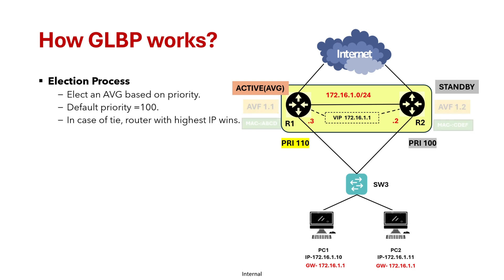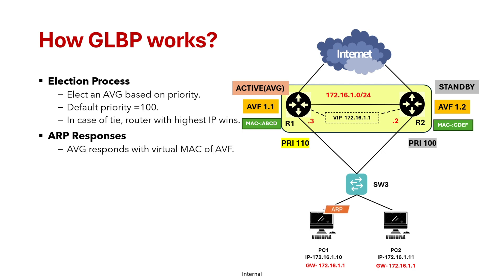Once the AVG is selected, it selects the AVFs as well. When the AVG and AVFs are known, the host sends an ARP request for the virtual IP address. The AVG responds with a MAC address — R1 responds with MAC address ABCD to PC1, and assigns CDEF, the MAC address of AVF R2, to PC2. The AVG uses a load balancing algorithm to decide which AVF MAC address to provide. By default, it uses round-robin, assigning virtual MAC addresses to hosts in sequential order and distributing traffic evenly.